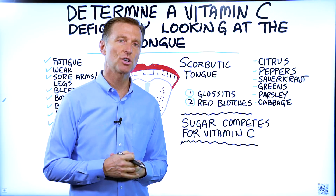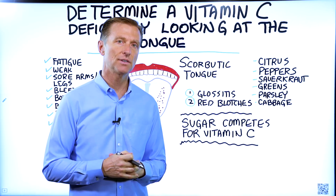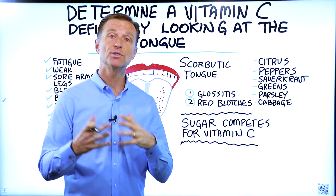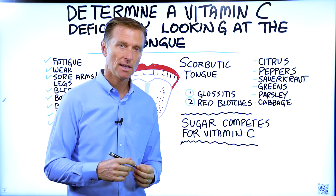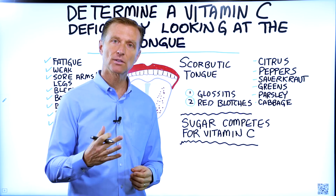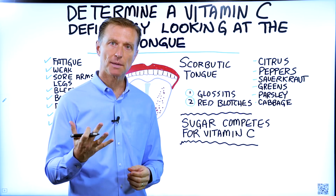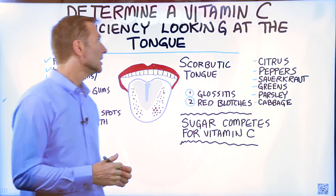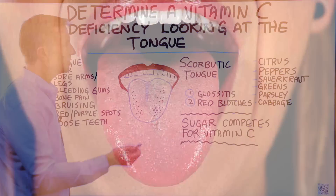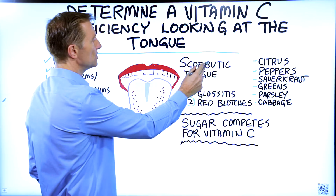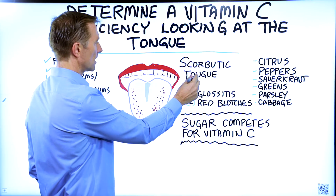Let's talk about how to determine a vitamin C deficiency — a major vitamin C deficiency, like a subclinical scurvy type situation — just from looking at the tongue. The name of this would be scorbutic tongue.